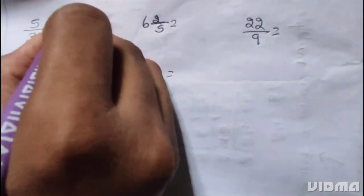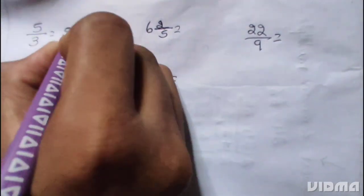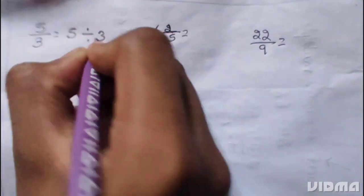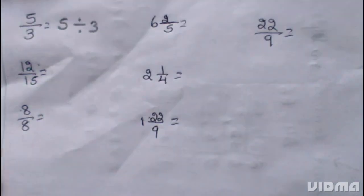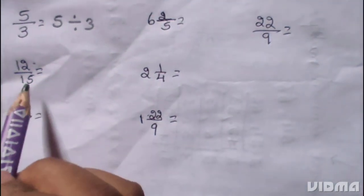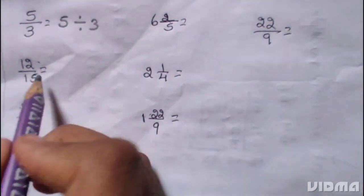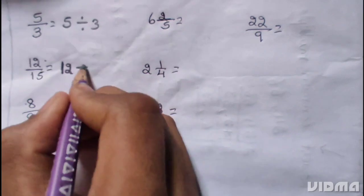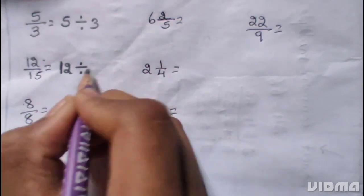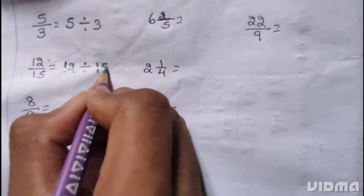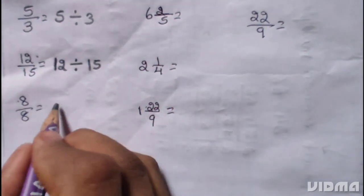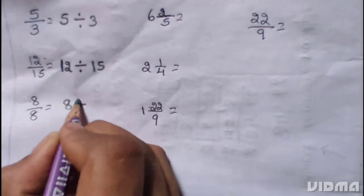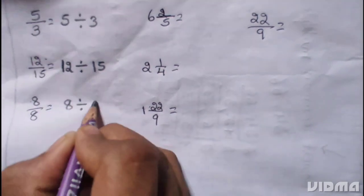5 by 3 — 5 divide 3. 12 by 15 — 12 divide 15. 8 by 8 — 8 divide 8.